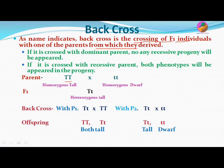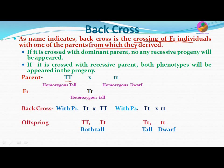As the name indicates, back cross is the crossing of F1 individuals with one of the parents from which they have been derived. The F1 hybrid obtained from two different types of parents is back crossed with one of the parents. If it is crossed with the dominant parent, no recessive progeny will appear, but if it is crossed with the recessive parent, both phenotypes — dominant and recessive — will appear.